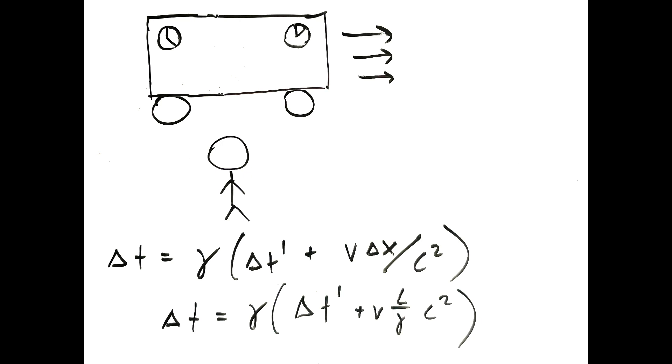which shows that there is indeed a finite shift between the rear clock and the front clock, with the rear clock being ahead by an amount LV over C squared, where L is the length of the train, V is the speed of the train, and C is the speed of light. And that's the rear clock ahead effect.